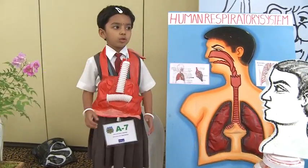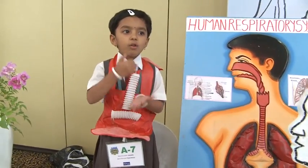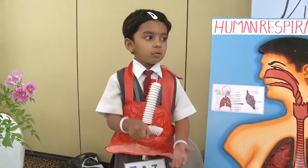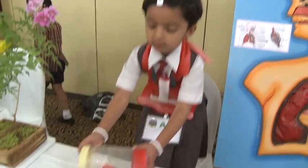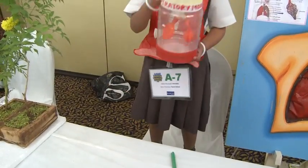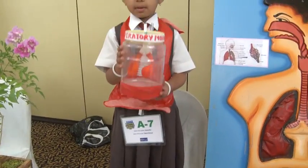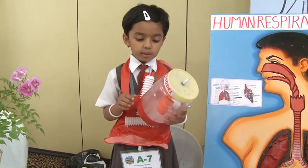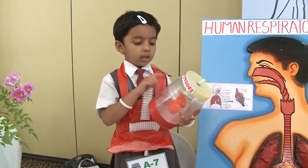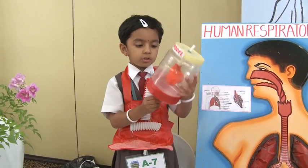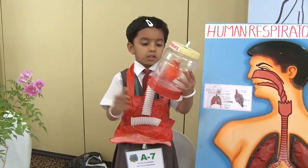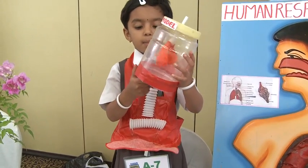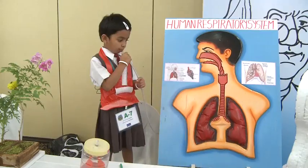Now I am going to show how our respiratory system works using a respiratory model. This white tip shows the windpipe and bronchi. These two balloons show the lungs. This bottle shows the ribcage. This rubber sheet shows the diaphragm.